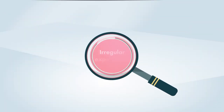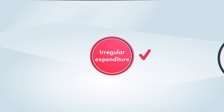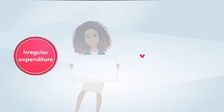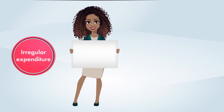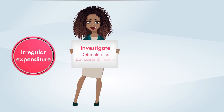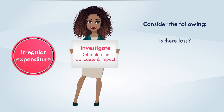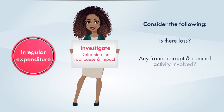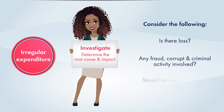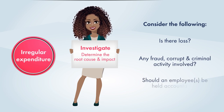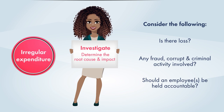Once irregular expenditure has been identified, the accounting officer or authority must investigate to determine the root cause and impact by considering the following: Did the non-compliance result in a loss? Was any fraud, corrupt and criminal activity involved? And should an employee or employees be held accountable?